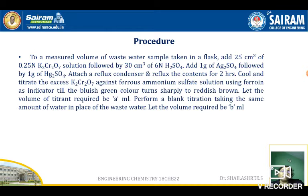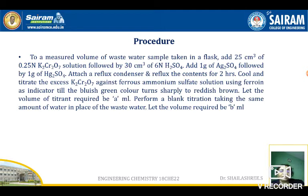Titrate the excess K₂Cr₂O₇ against ferrous ammonium sulfate (FAS) solution using ferroin as an indicator. When you add ferroin, you will get an initial bluish-green color. Titrate against the FAS solution until you get a reddish-brown color. Add few drops of ferroin indicator, observe the blue-green color, and titrate against standard FAS taken in the burette until color changes to reddish-brown. Let the volume of FAS consumed be A mL.